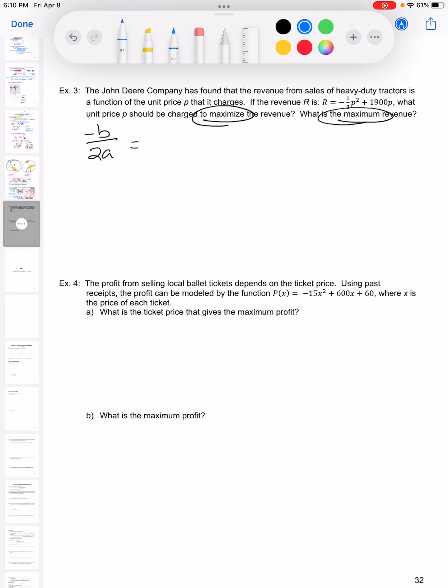So coming up here to my problem, a is negative one-half, b is 1900, and c is 0. So I'm going to plug that in. That denominator is just going to give me negative 1.